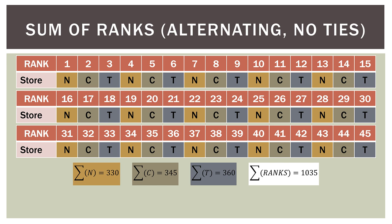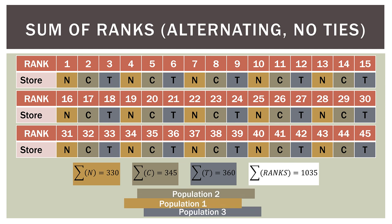This is our other extreme where the ranks actually alternate between the three stores. So here is our general hypothesis for the Kruskal-Wallis test: our null hypothesis states that all populations are the same, and our alternative hypothesis states that all populations are not the same. Rejecting the null hypothesis means that there is a difference among the locations of the populations, but it doesn't tell us necessarily where.